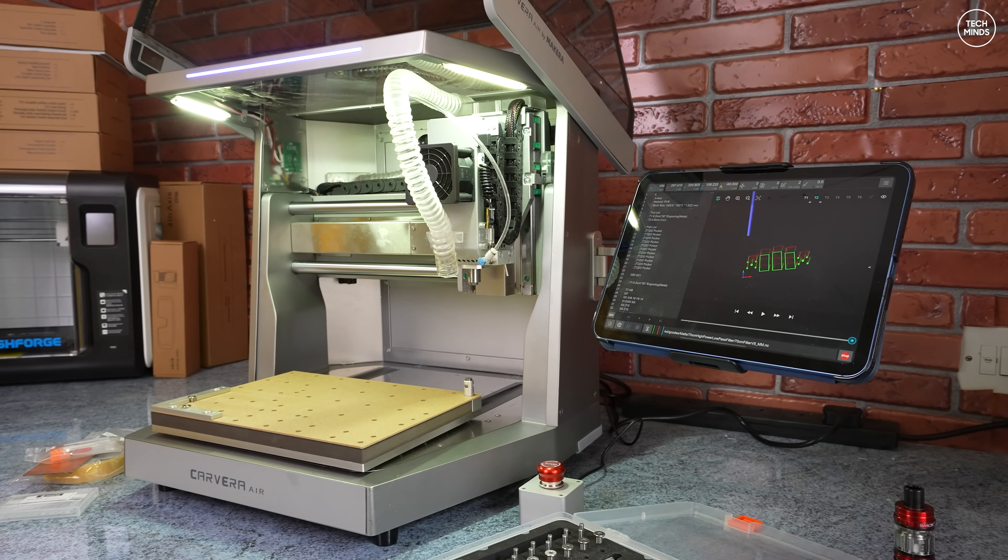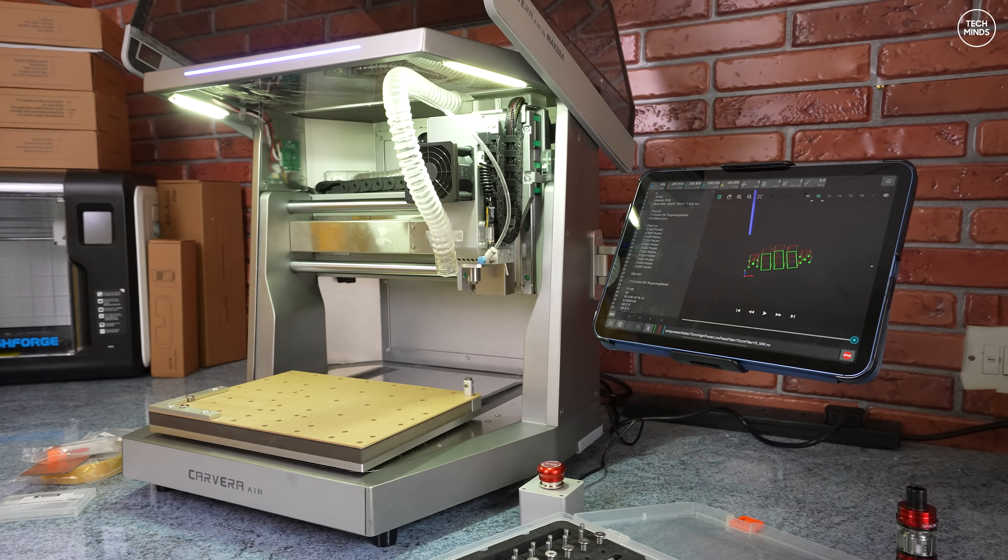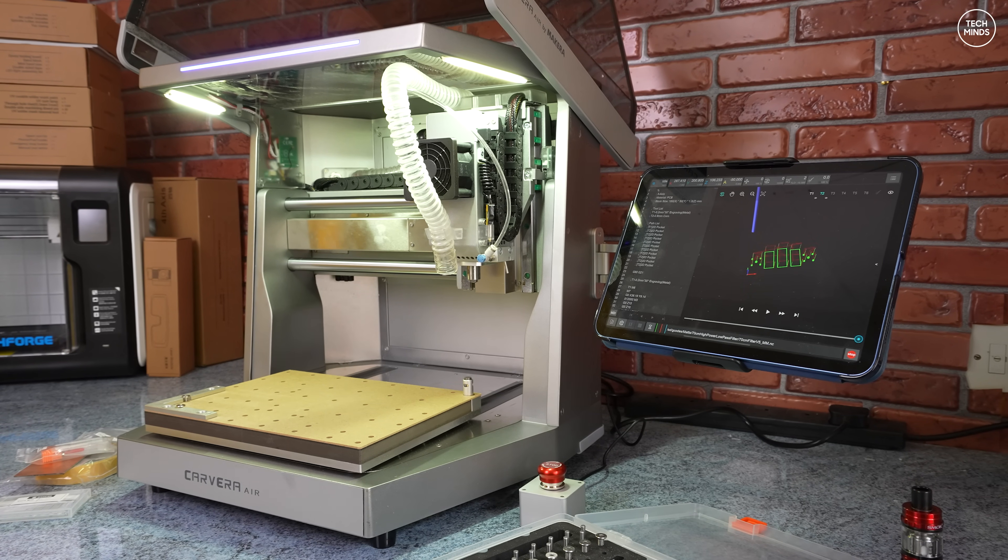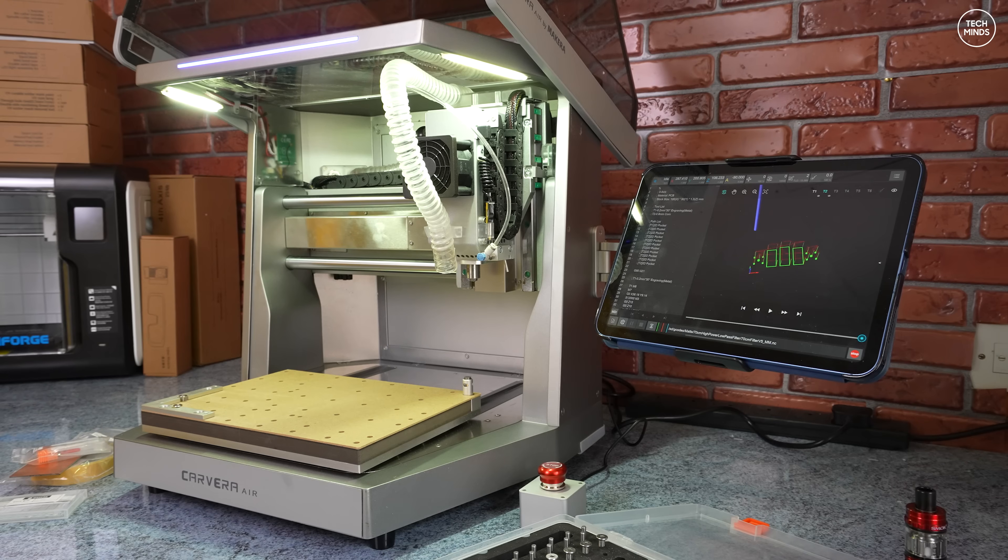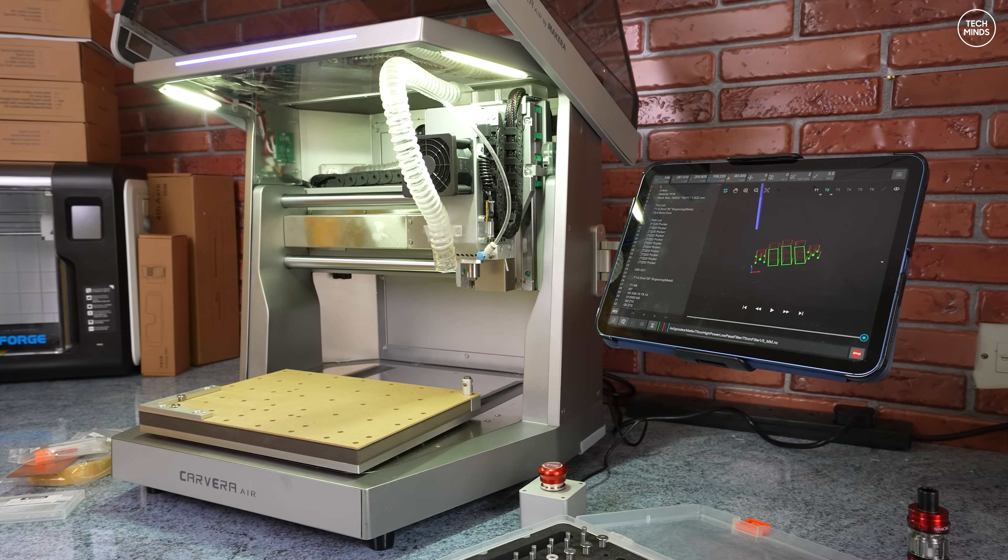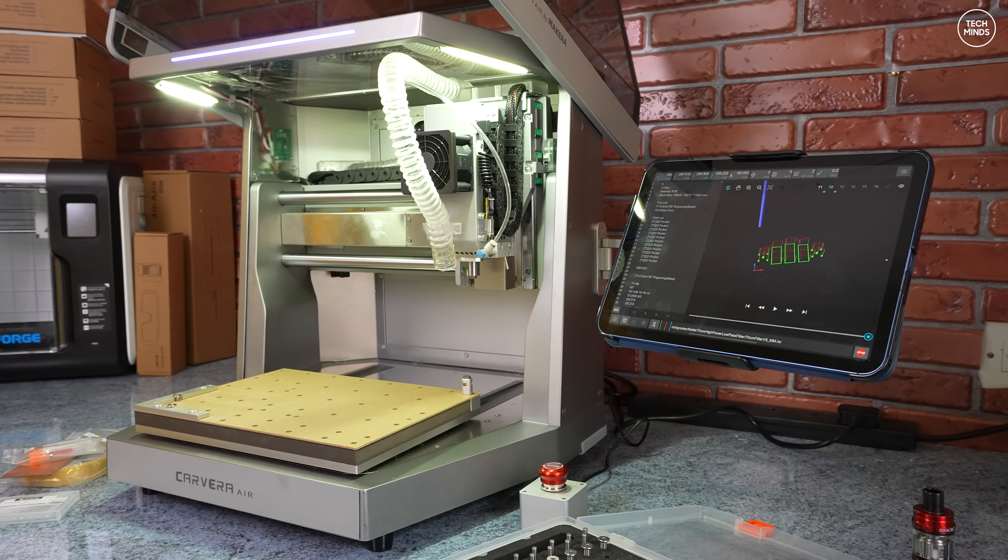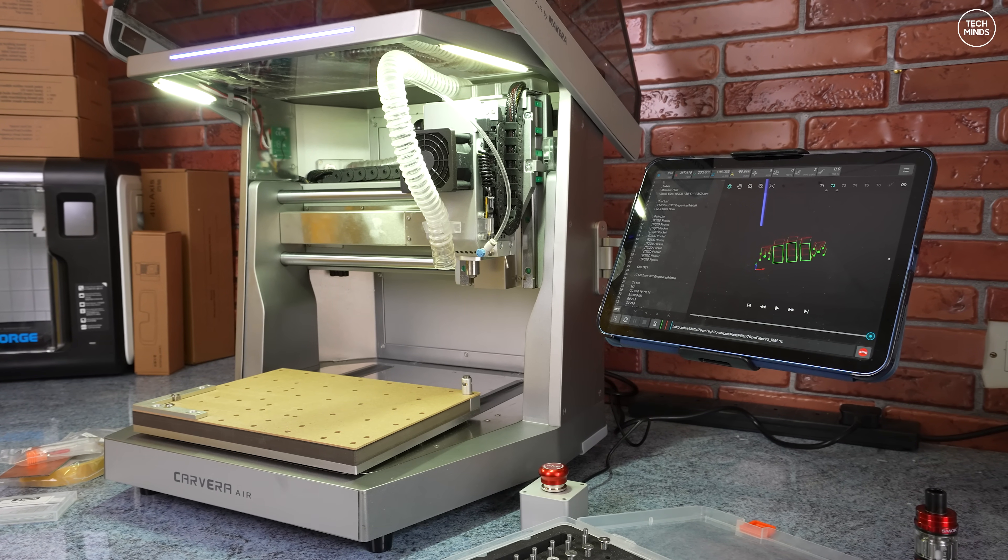You can also get attachments like a laser attachment for etching and a 4D axis spindle. I do actually have all of these options, but I'll be using them in future projects, so not all in one video.